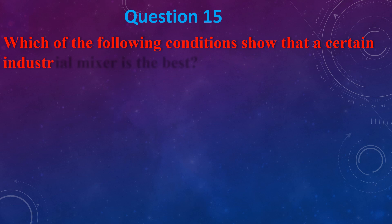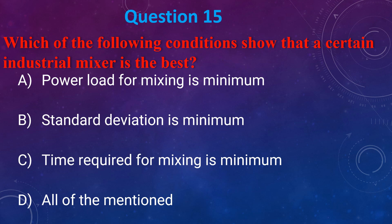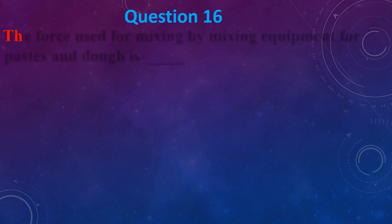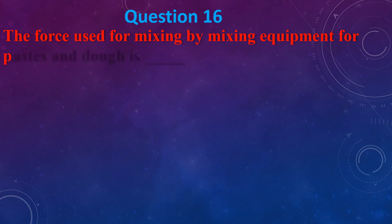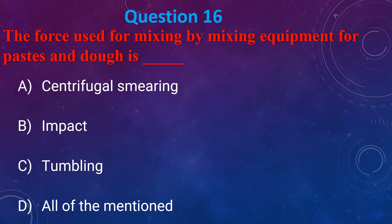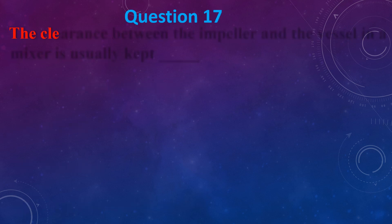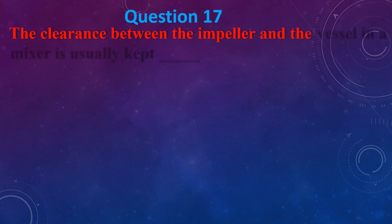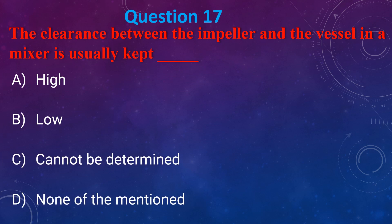Which of the following conditions shows that a certain industrial mix is the best? (a) Power load of mixing is minimum, (b) Standard deviation in mixing is minimum, (c) Time required for mixing is minimum, (d) All of the mentioned. The answer is (d) all of the mentioned. Mixing equipment used for paste and dust is: (a) Centrifugal screening, (b) Impact, (c) Tumbling, (d) All of the mentioned. The answer is (d) all of the mentioned.